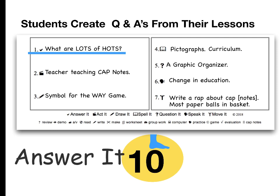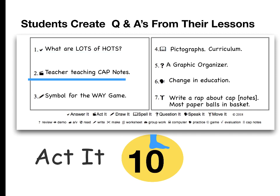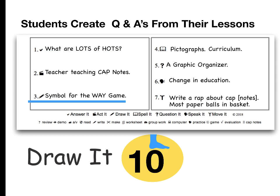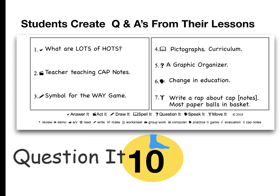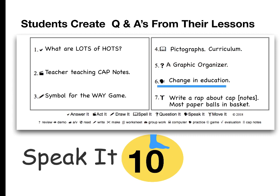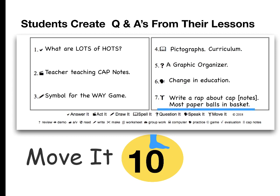The first game, Answer It, encourages students to think like teachers by creating short answer questions. In the second game, Act It, players are asked to improvise a scene. Third is Draw It — students represent ideas graphically. The fourth game is Spell It, where students identify key vocabulary words related to a topic by spelling them. Question It is the fifth game, where students learn to question more effectively. The sixth game, Speak It, is where debating skills are developed. In the seventh game, Move It, physical or musical activities associated with a topic are created.